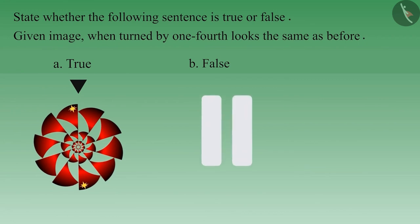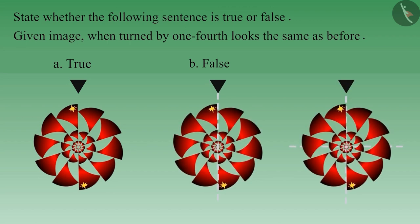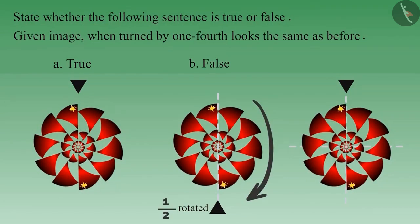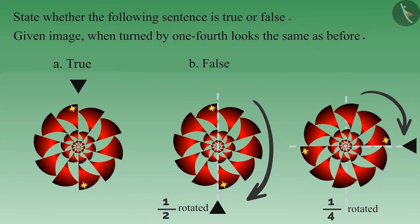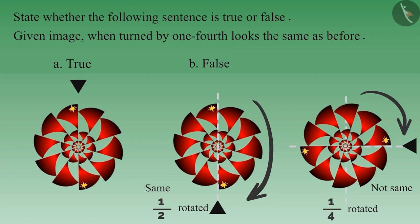On rotating the given image by one quarter, it looks the same as before. If you consider this statement as true, you must be thinking that on rotating the image by half it will again look like this, and if it looks the same after rotating by half then it will look the same when rotated by one quarter as well. But that is not so. Take a closer look — when rotated by half it looks the same, but it doesn't look the same when rotated by one quarter. Therefore, it is not necessary that if an image looks like its original self when rotated by half, it would also look the same when rotated by a quarter. Therefore this statement is false.